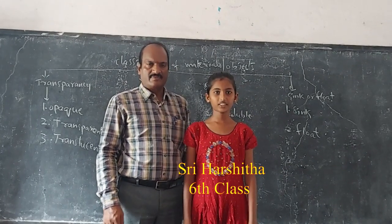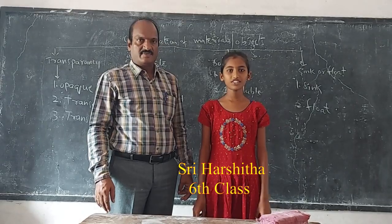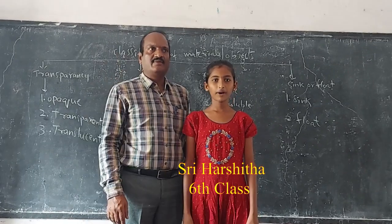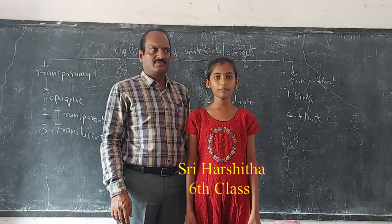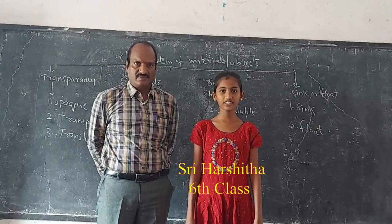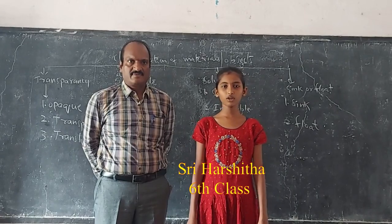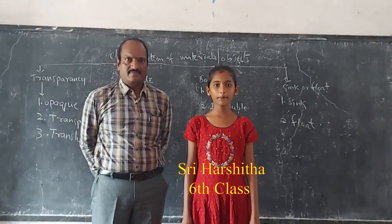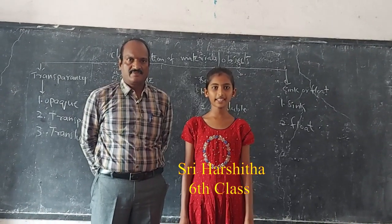Translucent. The objects which allow partial light through them are called translucent. Example: oil paper, polythene bag, etc.